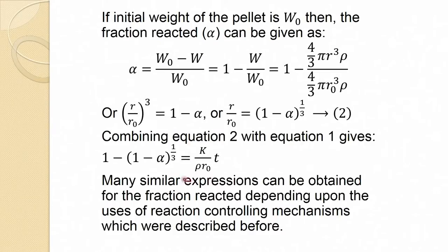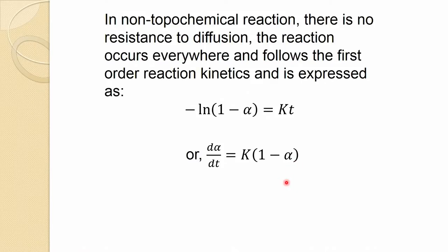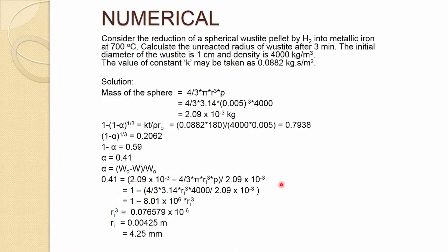For non-topochemical reaction, where there is no resistance to diffusion and reaction occurs everywhere, it follows first-order reaction kinetics. For the reduction of iron oxide in this case, it is expressed in a form that gives the fraction reacted. Now it is probably time for a numerical example to understand how this reaction kinetics works and how one can calculate various parameters.